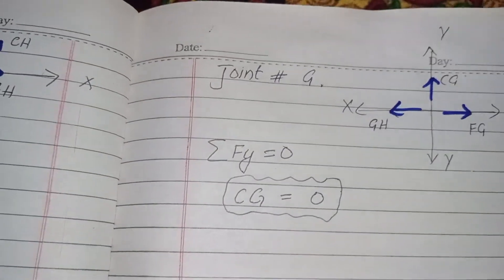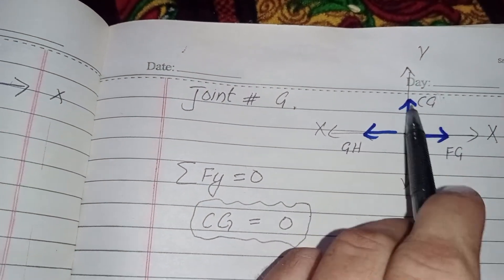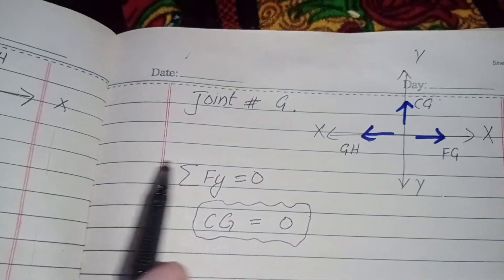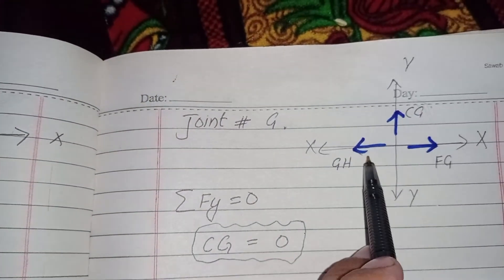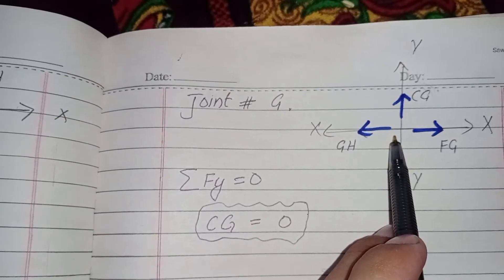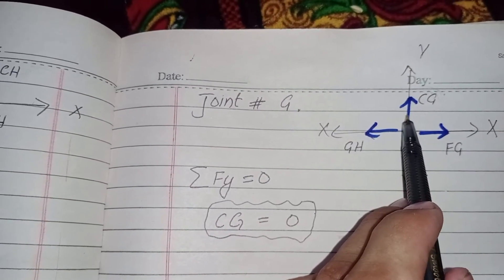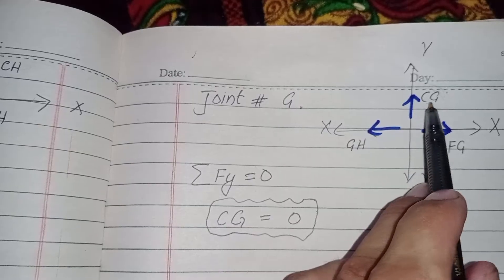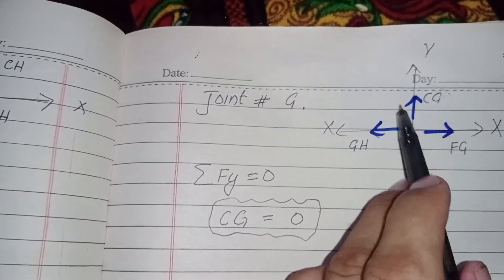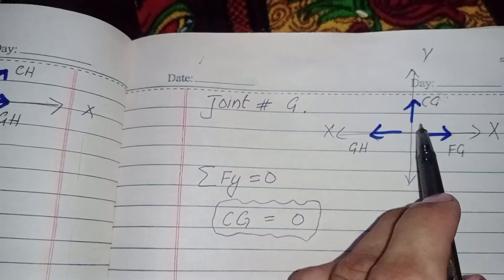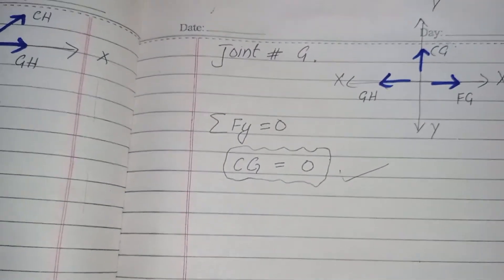Now I take joint G to find the force in CG. If two forces are in the same line of action and opposite direction, and a third force makes an angle with these two forces, that third force must be zero. So we can directly say that CG equals zero. Thank you very much.